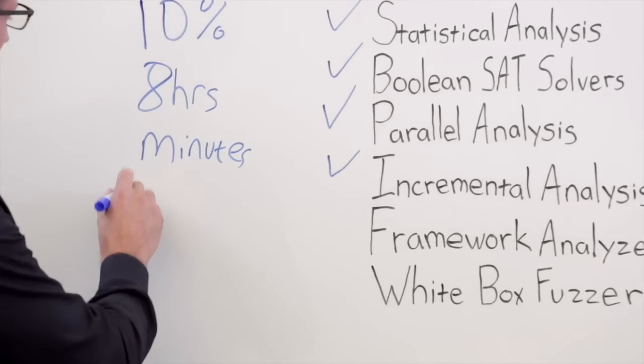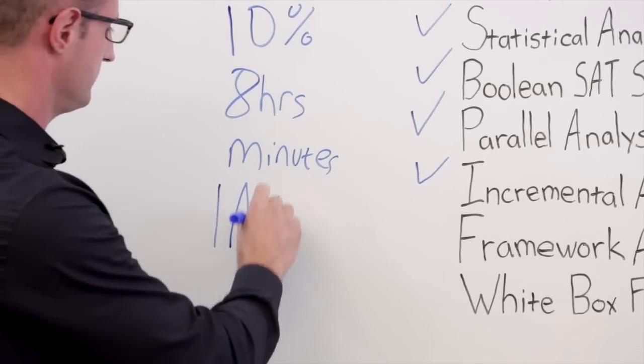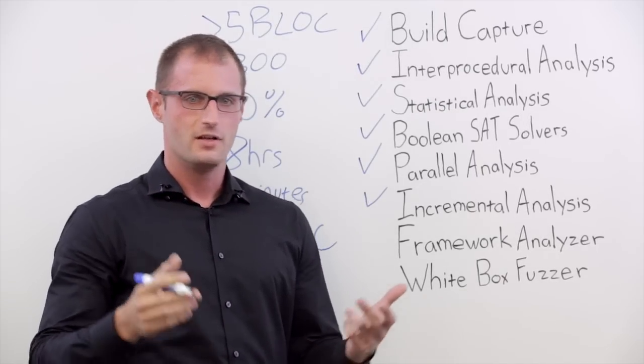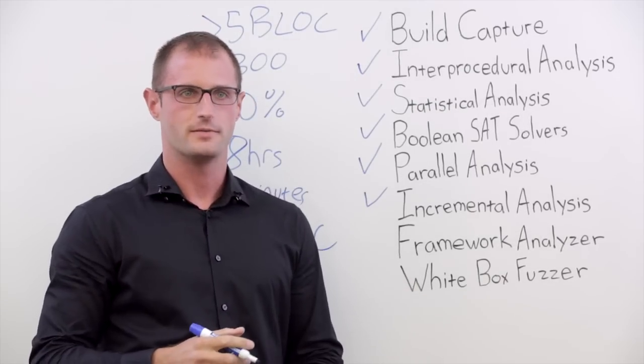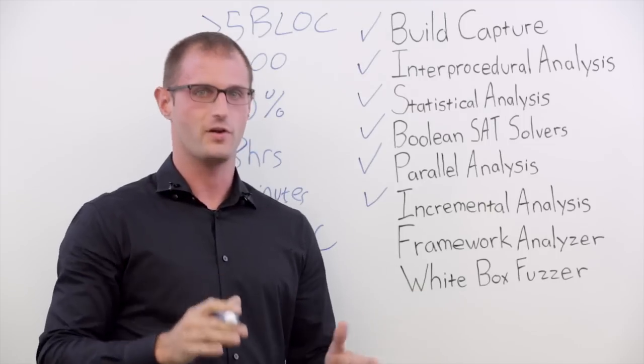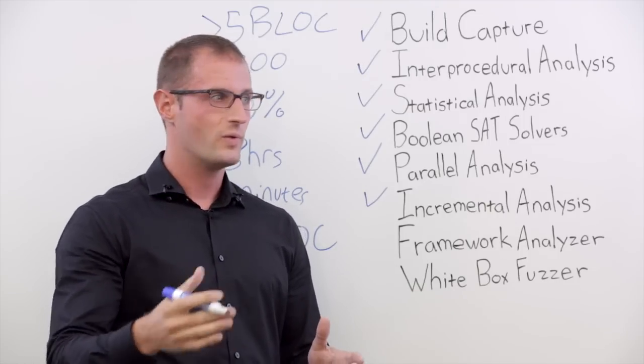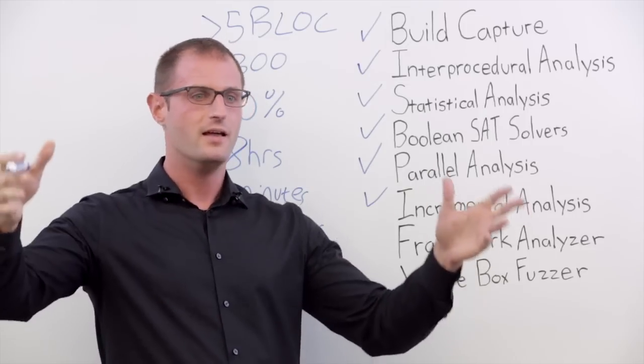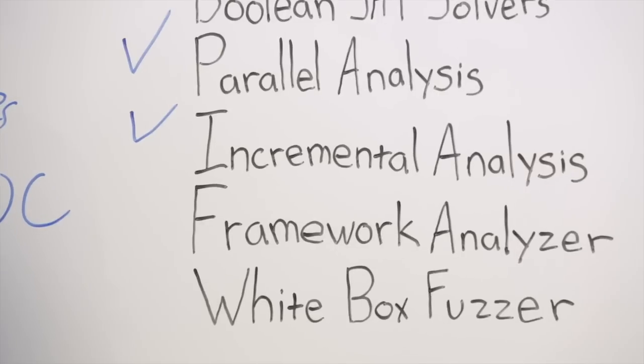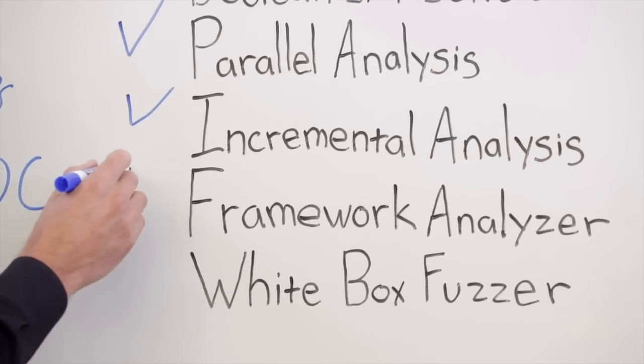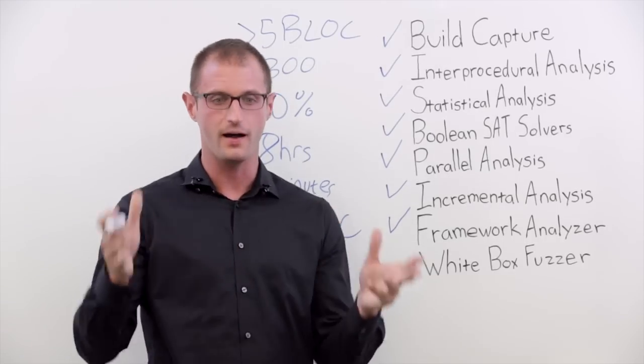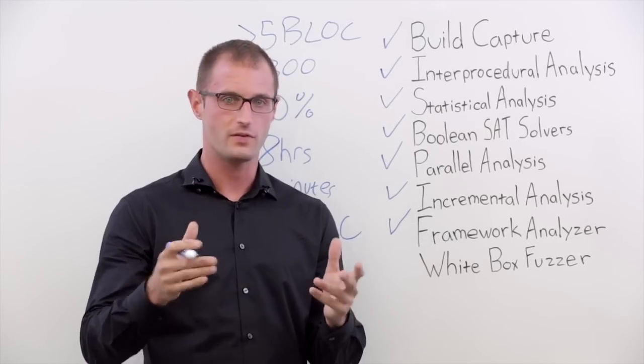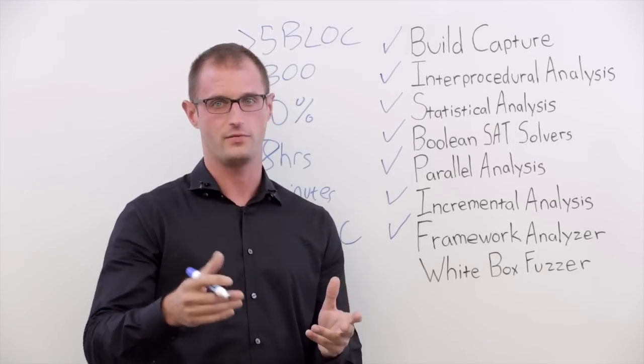How about another 1 million lines of code? That's the size of an average modern web application framework. That's just the framework, that doesn't count your code yet. When you build your web applications, your business logic runs within this much larger framework. Our framework analyzer analyzes your code within the context of the larger application framework, giving us a much more complete view. That means more accurate results, more defects, and less noise.